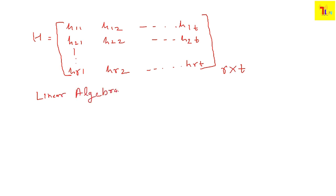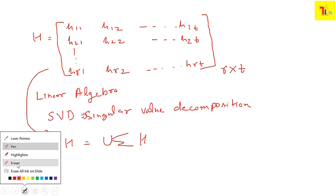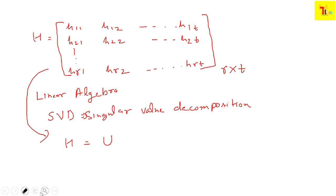There is a very beautiful concept from linear algebra used in signal processing called SVD — Singular Value Decomposition. SVD basically converts our H matrix into the format U·Σ·V^T.